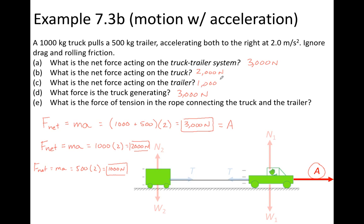For part E, we want to find the force of tension in the rope connecting the truck and trailer. We have to consider a different system because for the truck and trailer system, tension cancels out. So we consider just the trailer alone. When looking only at the trailer, tension is external and is the only uncancelled external force, meaning it must be equivalent to the net force acting on the trailer — 1000 newtons. This tension force provides the net force acting on the trailer.